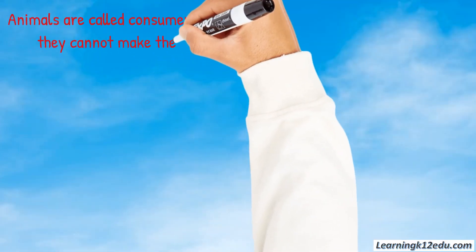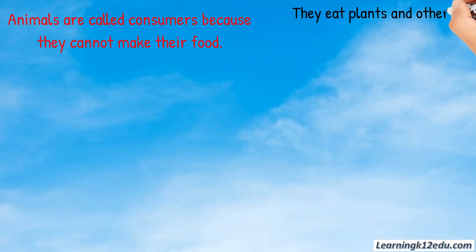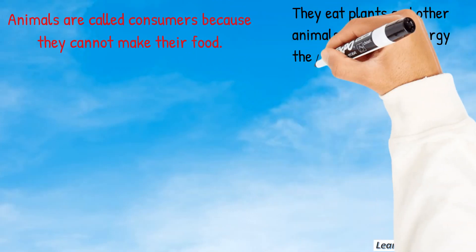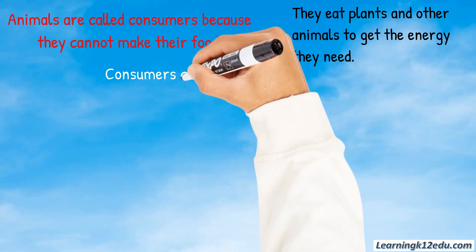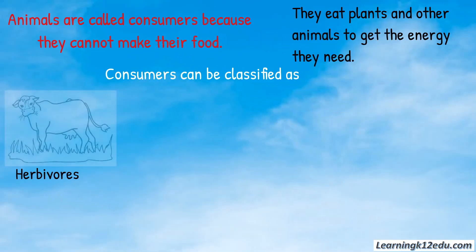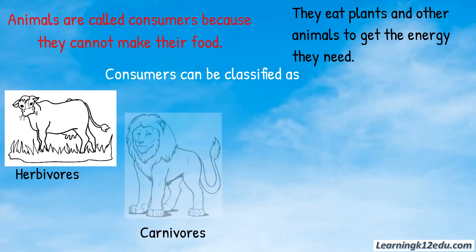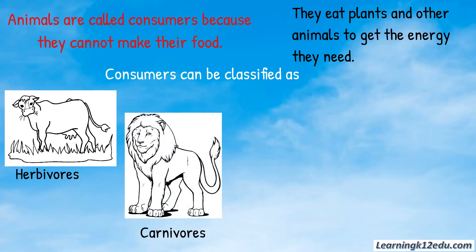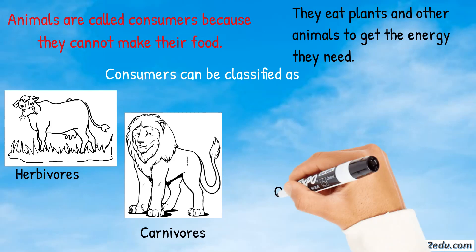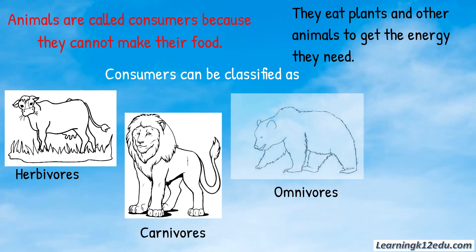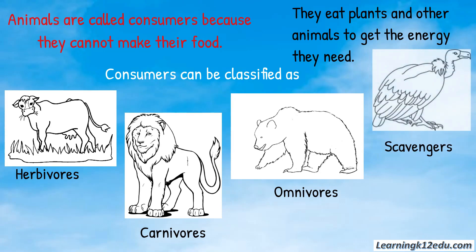Animals are called consumers because they can't make their own food. They eat plants and other animals to get the energy they need. Consumers can be classified as herbivores — those who eat only plants; carnivores — those who only eat other animals; omnivores — those who eat both plants and animals; and scavengers — those who don't hunt but eat dead plants and animals.